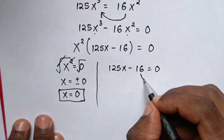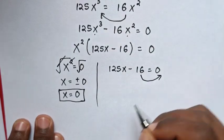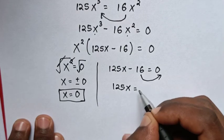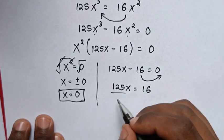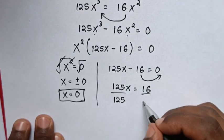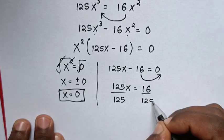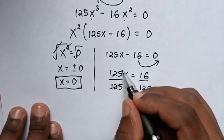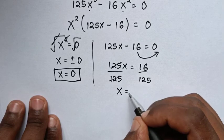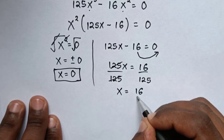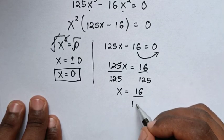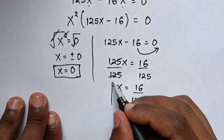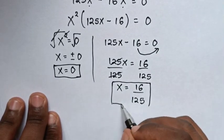And in this case, we take negative 16 to the right side. So it will be 125x is equal to 16. Then we divide by 125 in both sides, so this and this will cancel. Therefore x is equal to 16 over 125. So this is the other value of x.